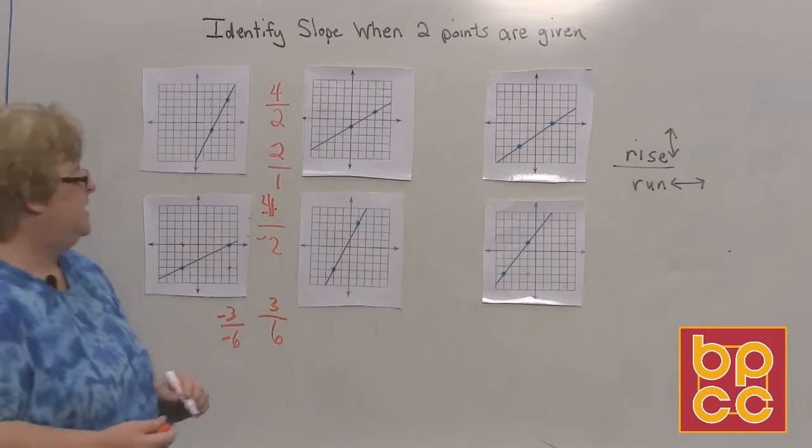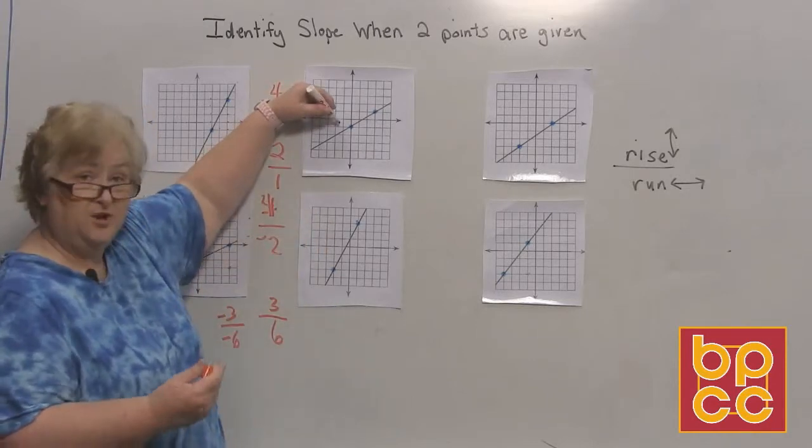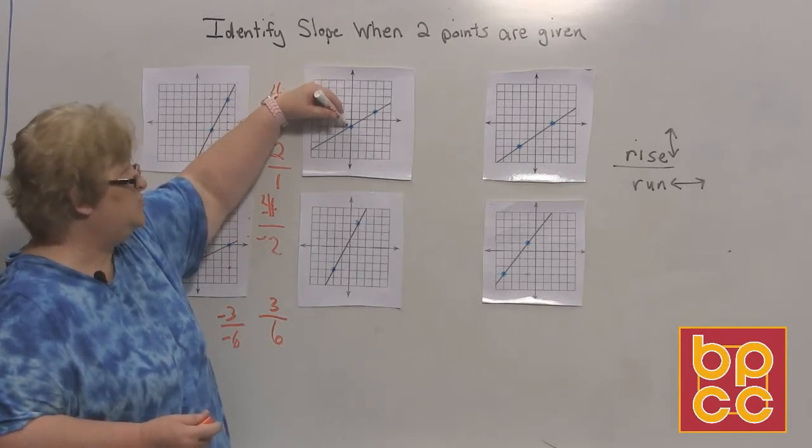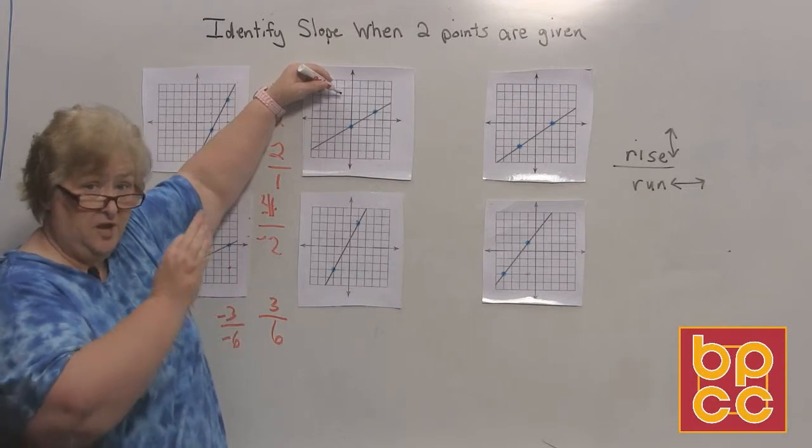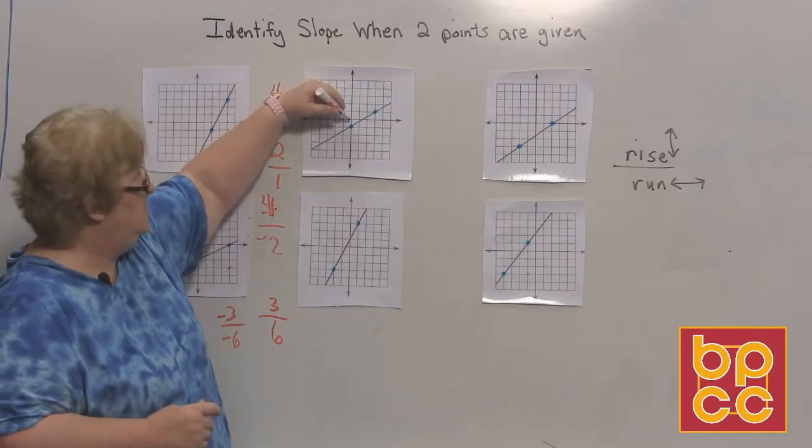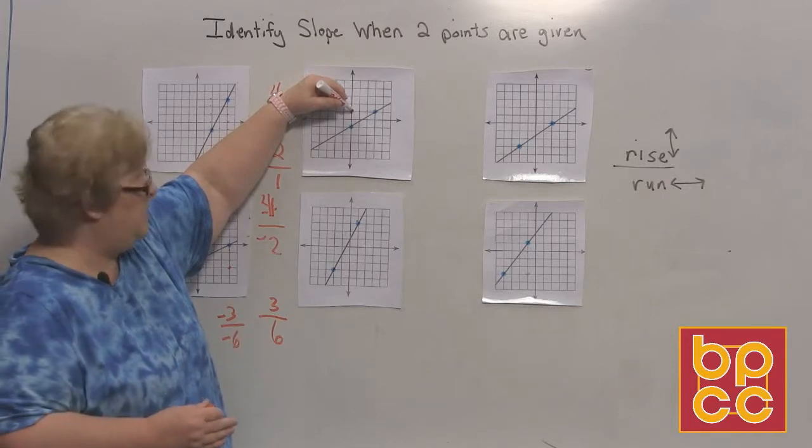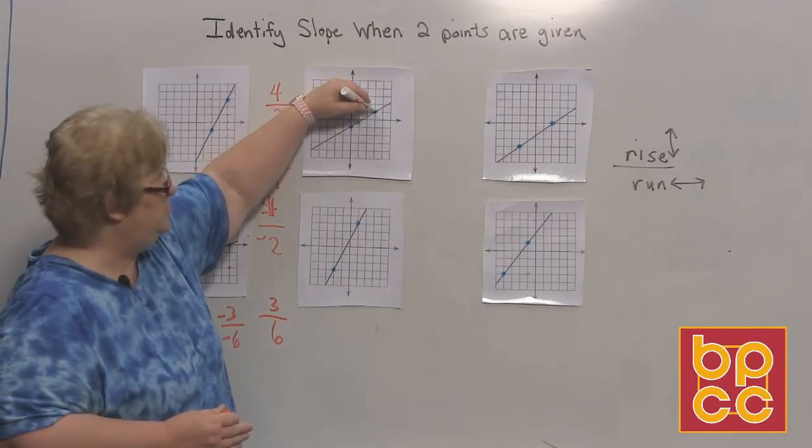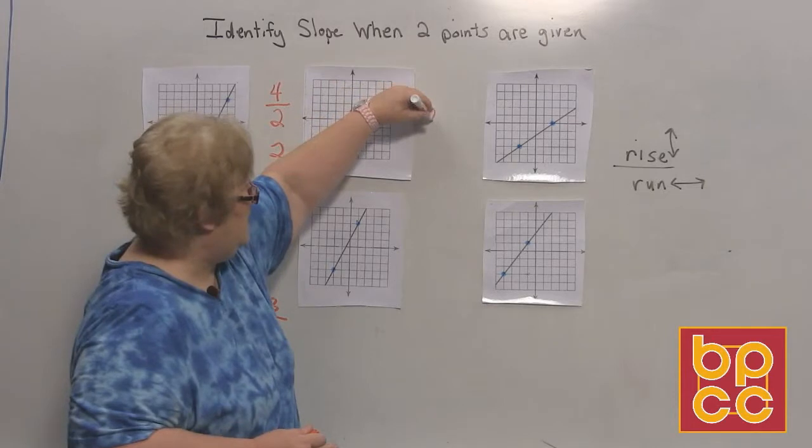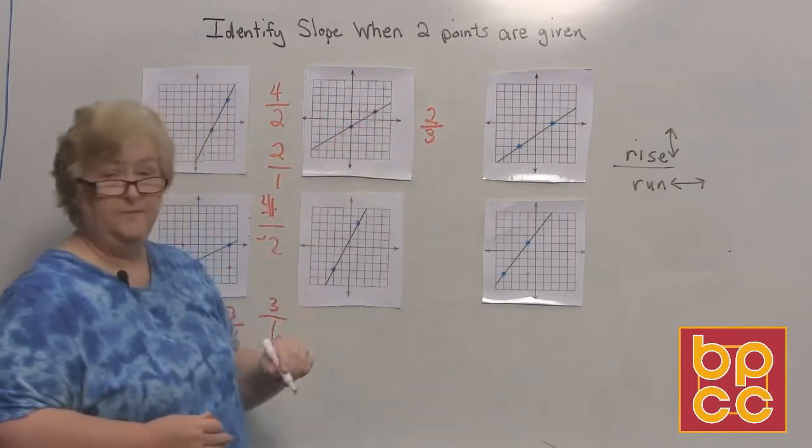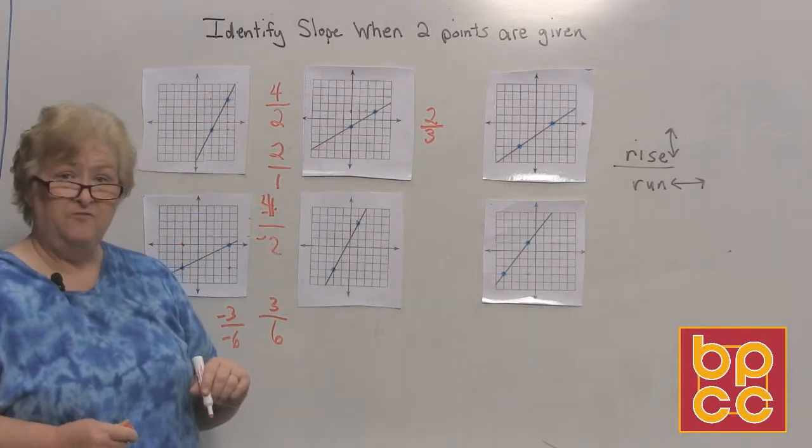All right, let's try the next one. On this one I'm going to start with the bottom left but it doesn't really matter. I'll start here. I'm going to travel up. Looks like I'm going to travel up 2. That's up, that's going to be positive: 1, 2. And now I'm going to turn and go right which is also positive: 1, 2, 3. So I went up 2 and to the right 3. So the slope is 2 over 3.